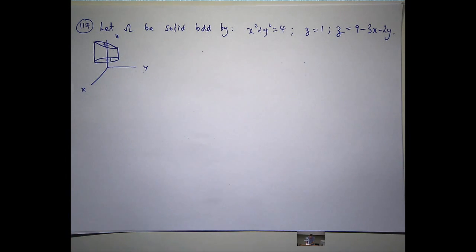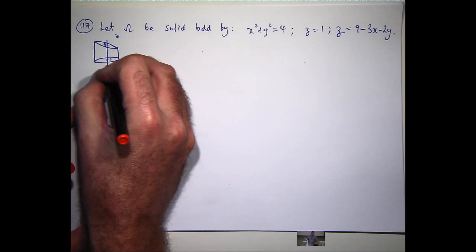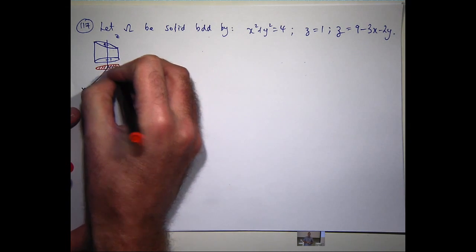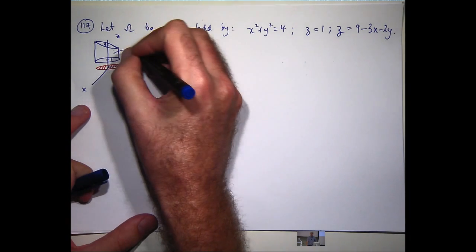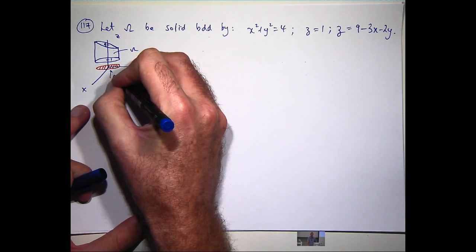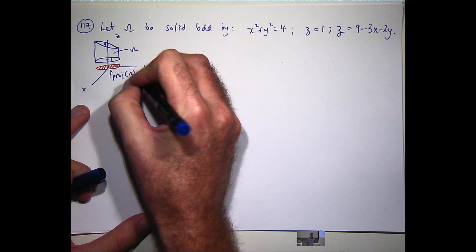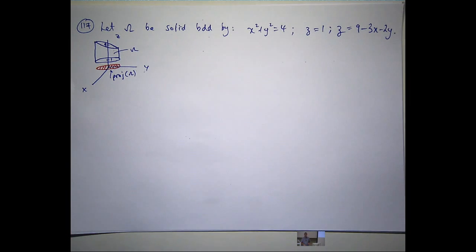So think of this sort of slice slanting down towards the xy positive or non-negative xy quadrant. Okay. Now, when x and y are both 0, this is just 9. So you can sort of intersect it there. Okay. Not a perfect picture, but not bad. Now, one important piece of information with these kinds of problems is to look at the projection of the solid on the xy plane.